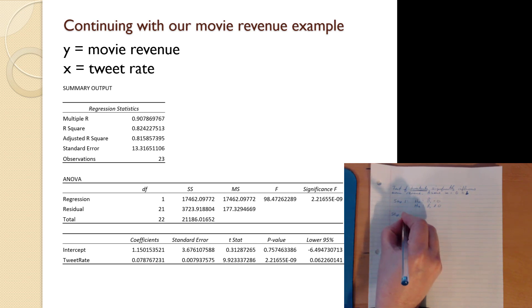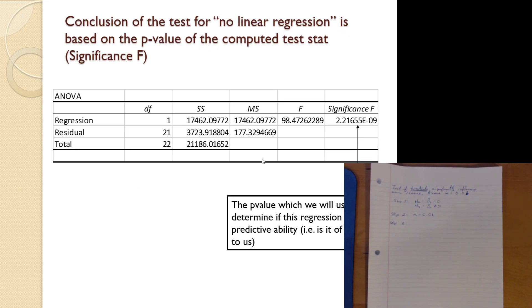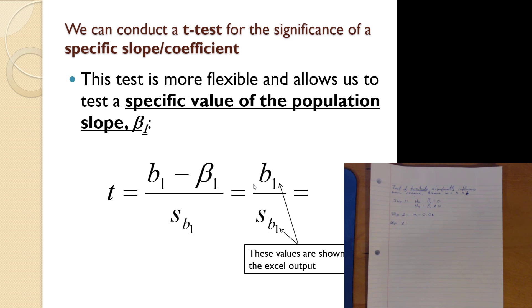Step two, level of significance, which we give to be 0.06. Step three, the test statistic. Now let's talk a little bit about that test statistic before we rush into writing it down. Typically we are testing to see if beta one is equal to zero, which is what we're doing now. We could test to see if beta one is a specific value or greater than a specific value or less than a specific value. So we're not restricted to it to be zero.